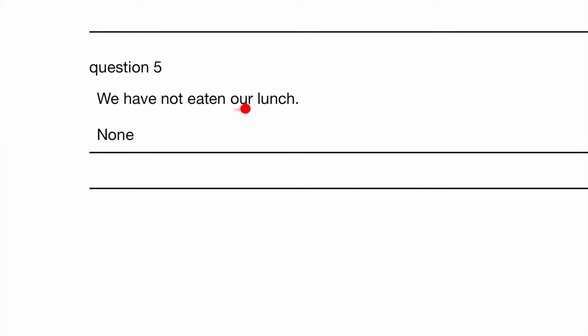We have not eaten our lunch. So: none of us has eaten our lunch. The difference is: 'we' is plural so 'have,' but 'none of' is singular so we must use 'has.' 'Have' is plural, 'has' is singular. Summary: 'we' is plural → have is plural; 'none of' is singular → has is singular.